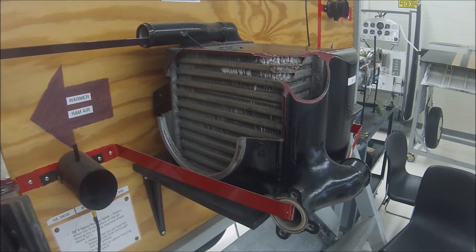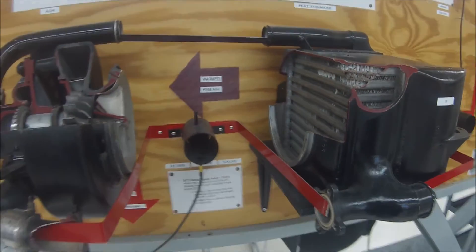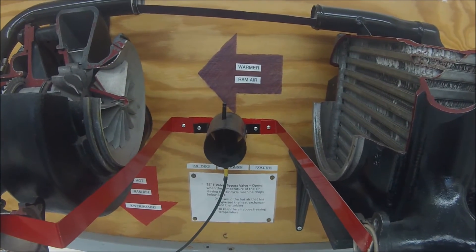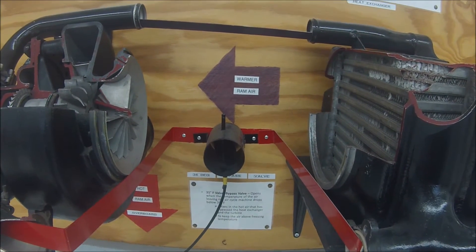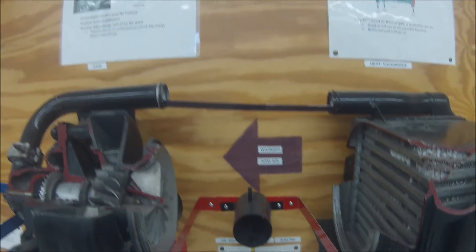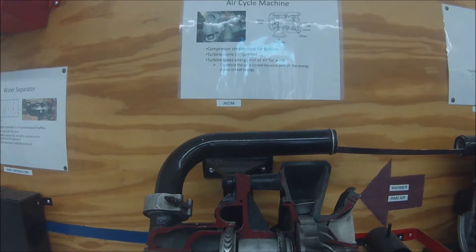Next is the 35 degree bypass valve. It opens when the temperature of air leaving the air cycle machine drops below 35 degrees Fahrenheit. It mixes in hot air that has bypassed the heat exchanger and turbine, keeping air above the freezing temperature of 32 degrees Fahrenheit.